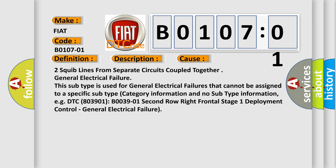Category information and no subtype information. Example DTC B03901-B0039-01: Second row right frontal stage 1 deployment control, general electrical failure.